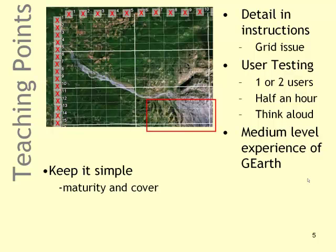An example where I failed: I asked students to map both the maturity of trees and the percentage cover, which was really too much for students to deal with. Maturity was quite difficult to assess because you'd have to look at the size of trees. In further years I just got them to map percentage cover of trees and dropped the maturity.